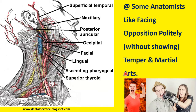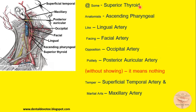This is our mnemonic for the external carotid artery branches: Some — superior thyroid artery; Anatomist — ascending pharyngeal artery; Like — lingual artery; Facing — facial artery; Opposition — occipital artery; Politely — posterior auricular artery. And for the last two, Tempor gives superficial temporal artery, and maxillary artery.